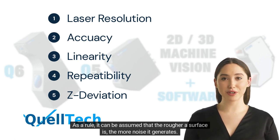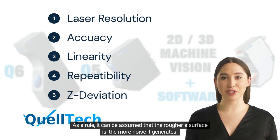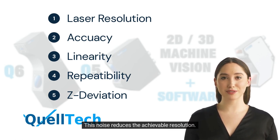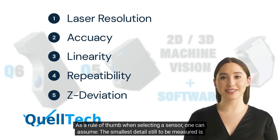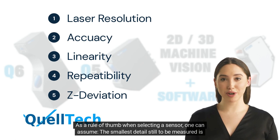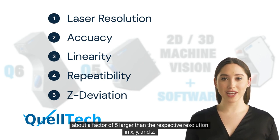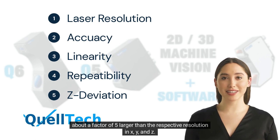As a rule, it can be assumed that the rougher the surface, the more noise it generates, and this noise reduces the achievable resolution. As a rule of thumb when selecting a sensor, one can assume the smallest detail still to be measured is about a factor of 5 larger than the respective resolution in x, y, and z.